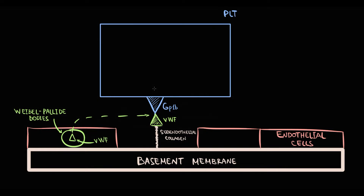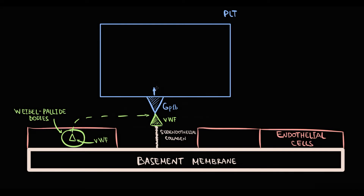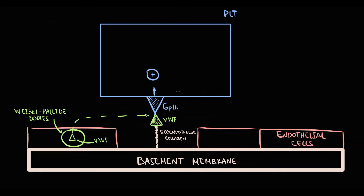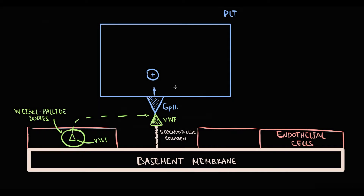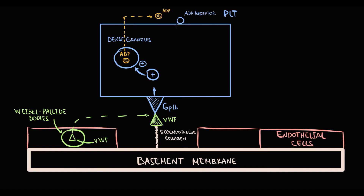After adhesion, platelets become activated. In response to this, they undergo shape change that results in their degranulation. With degranulation, platelets release the content inside them, including the dense granules that contain ADP. ADP that is released into the blood acts on ADP receptors on platelets and activates them.